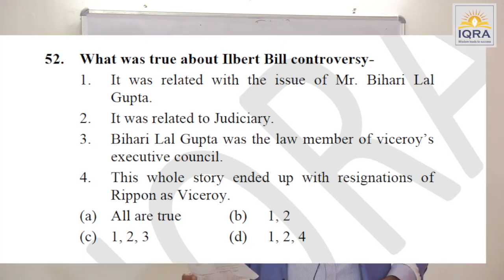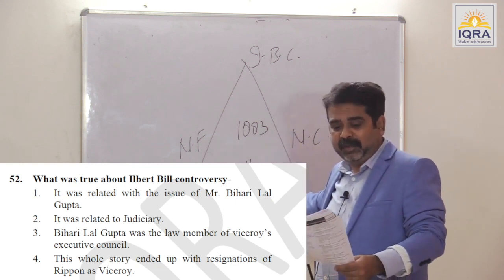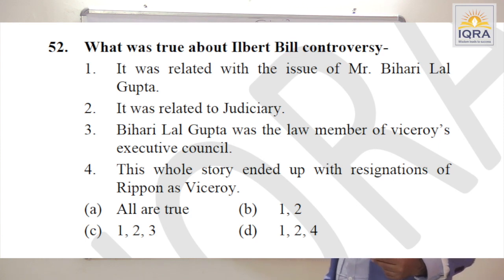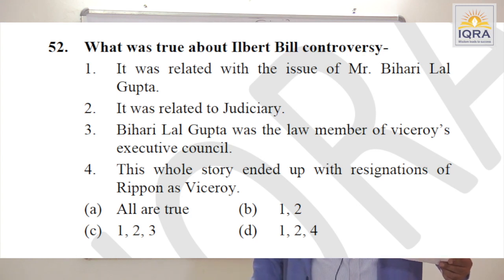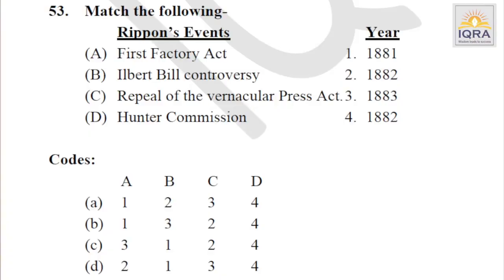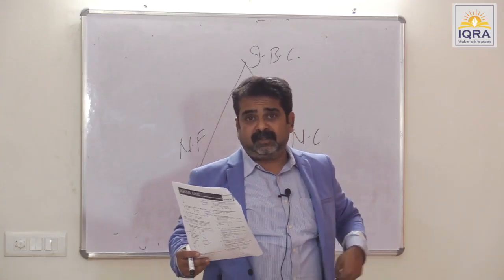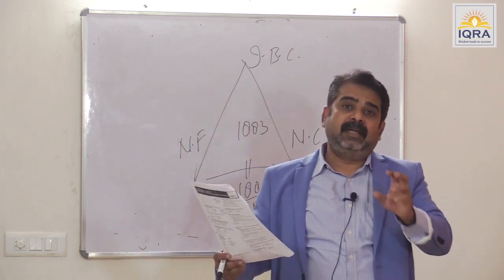What was true about the Ilbert Bill Controversy? Very important — this bill became the background for the birth of Congress. It was related to the issue of Mr. Biharilal Gupta — true. It was related to judiciary — true. Biharilal Gupta was law member of Viceroy's executive council — false. The whole story ended with Ripon's resignation as Viceroy — false. Statements 1 and 2 only. Answer is D.